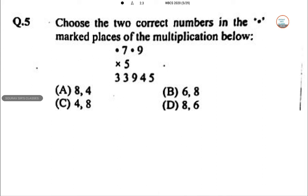Choose the correct numbers marked in the places of the multiplication. So this is our multiplication. So now let me just rewrite. Star 7 star 9 into 5. So 5, 9 is 45. So here 4 is directly coming. So there has to be something which is providing this into this as 0 at the end. So 8 is the only number.